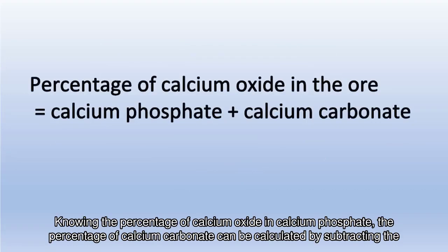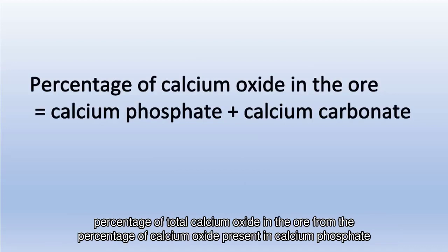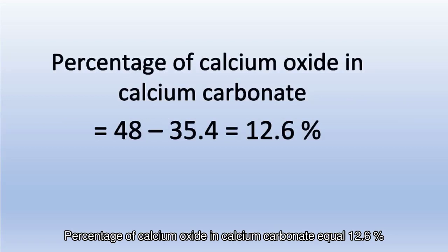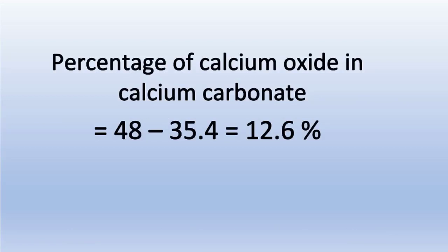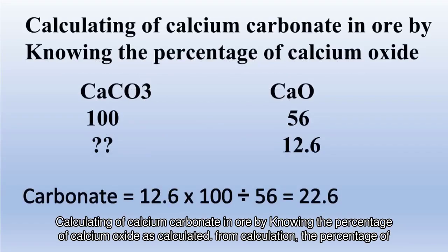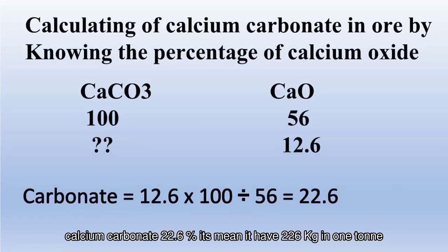Knowing the percentage of calcium oxide in calcium phosphate, the percentage of calcium carbonate can be calculated by subtracting the percentage of total calcium oxide in the ore from the percentage of calcium oxide present in calcium phosphate. The percentage of calcium oxide in calcium carbonate equals 12.6%. From this calculation, the percentage of calcium carbonate is 22.6%, meaning it is 226 kilograms in one tonne.